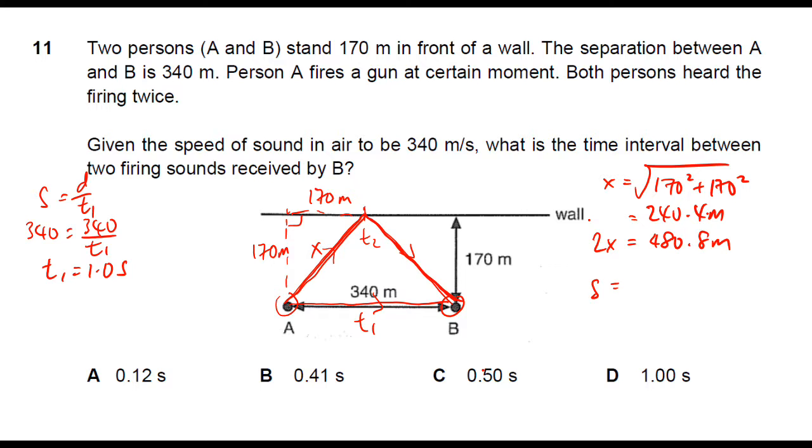So once again, applying speed equals distance over time for T2. The speed is 340, the distance is 480.8 divided by T2. And if you solve it, T2 will be 1.414 seconds.